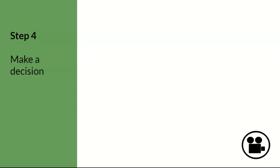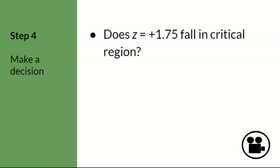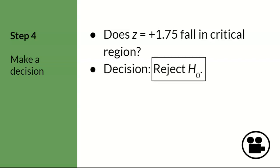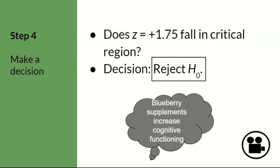Step four. Now we need to compare the sample z-score calculated in step three to the prediction determined in step two. Does z equals plus 1.75 fall in the critical region from step two? Since plus 1.75 is above the mean in the tail, past z equals plus 1.64, the answer is yes. The decision is to reject the null hypothesis. Overall, it looks pretty good for blueberry supplements. Since the z-score for the sample was positive and above the mean, it looks like cognitive functioning increased. After a hypothesis test is conducted, the researcher must always report and interpret the results of their study.